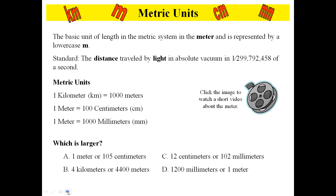The basic unit of length in the metric system is the meter, represented by a lowercase m. A few basic relationships to know: a kilometer is 1,000 meters; 1 meter equals 100 centimeters; and 1 meter is 1,000 millimeters. The abbreviations are km for kilometers, cm for centimeters, and mm for millimeters.